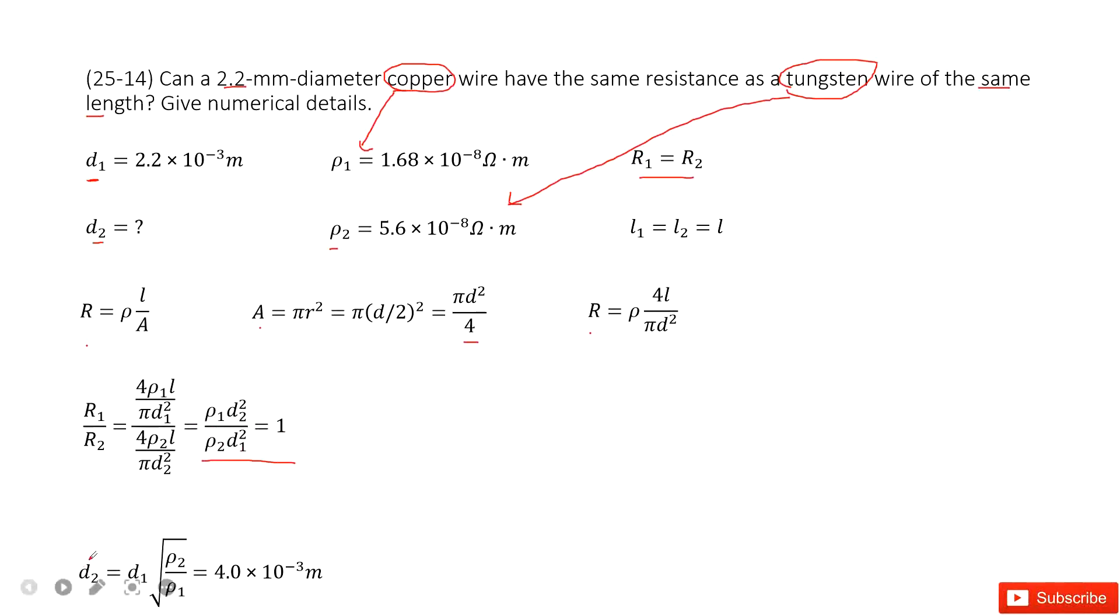We can get the function for D2, right? It looks like this one: D1 squared rho 2 over rho 1. Input the given quantities, get the answer there. Thank you.